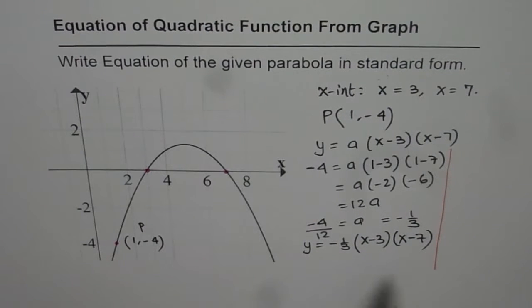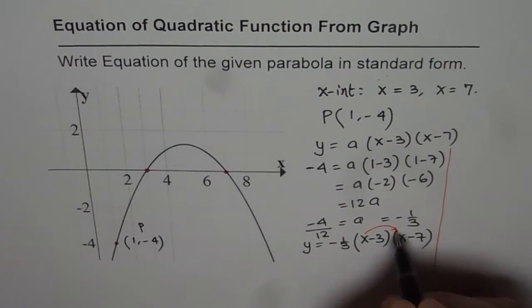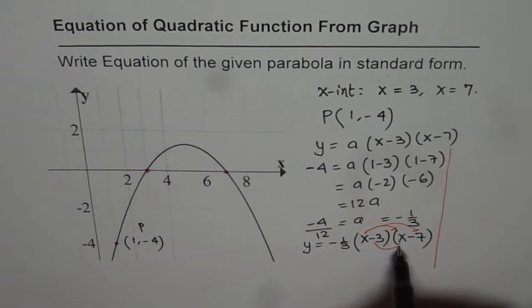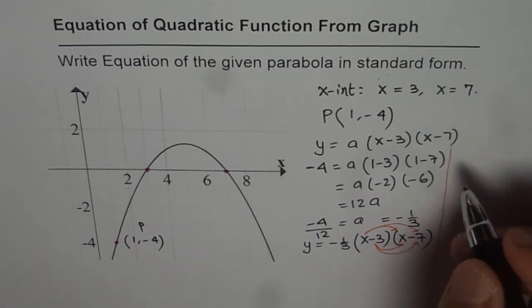Now to write it in standard form, we need to expand it. So multiply the x's together, apply the distributive: x² - 7x and then -3x. That will make it -10x. And then the product will be +21. Everything should be multiplied by -1/3.